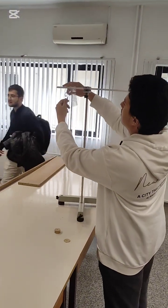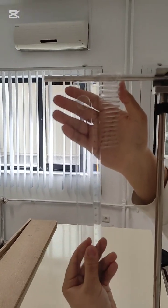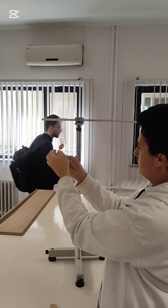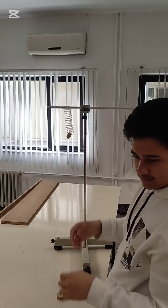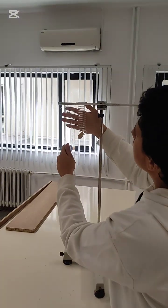First, we measure the equilibrium length of the spring where there is no mass hanged. After that, we hang a mass to the spring and wait for it to stop. After it stops, we measure the length, that is the stationary length.